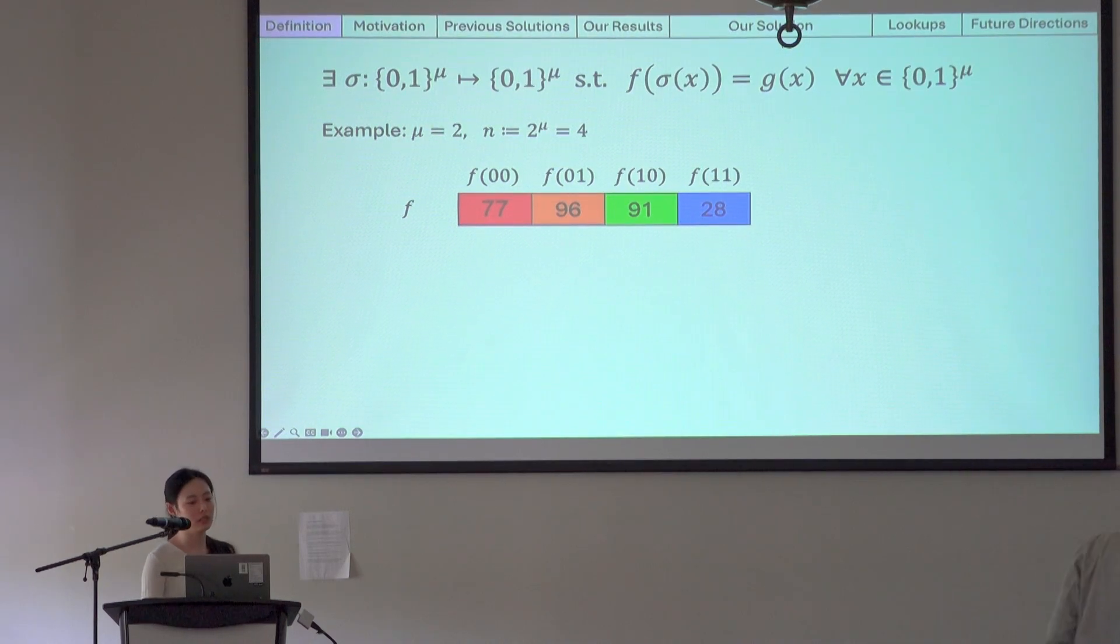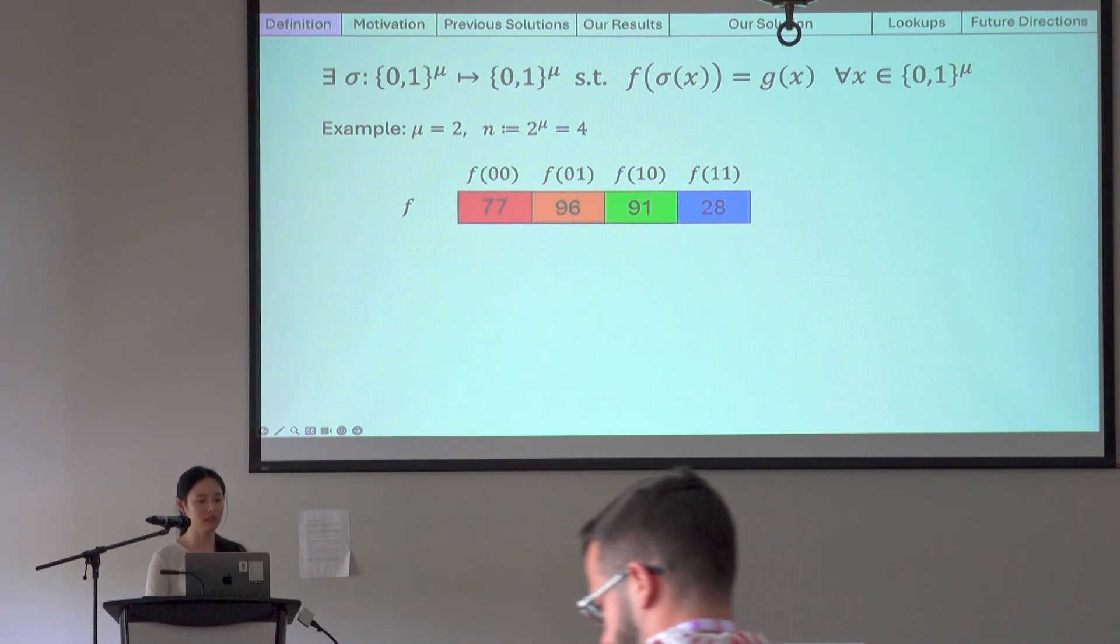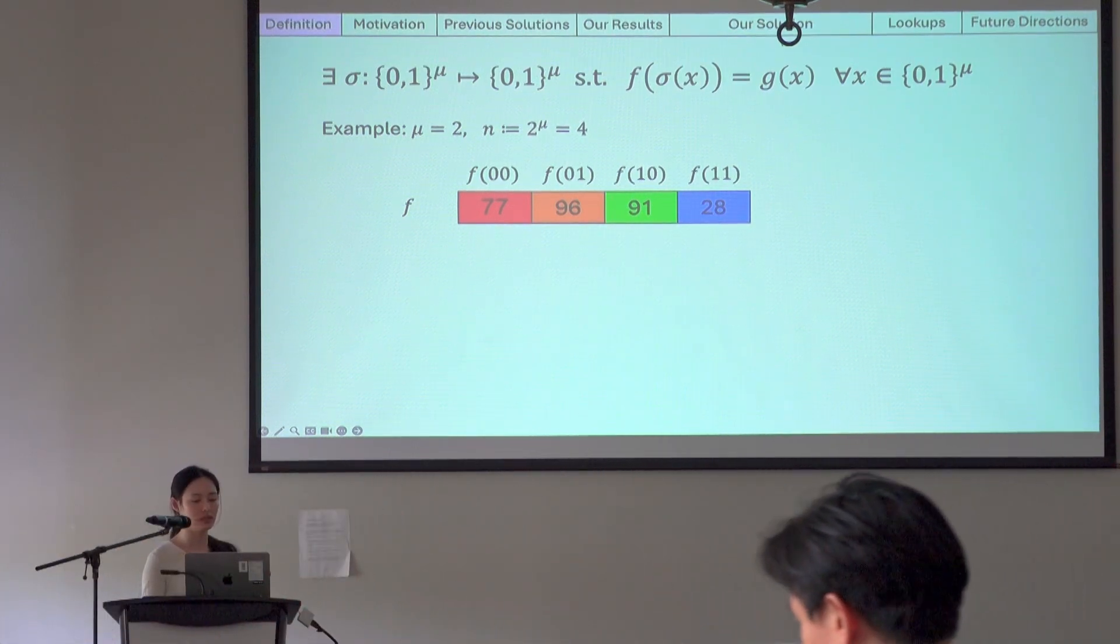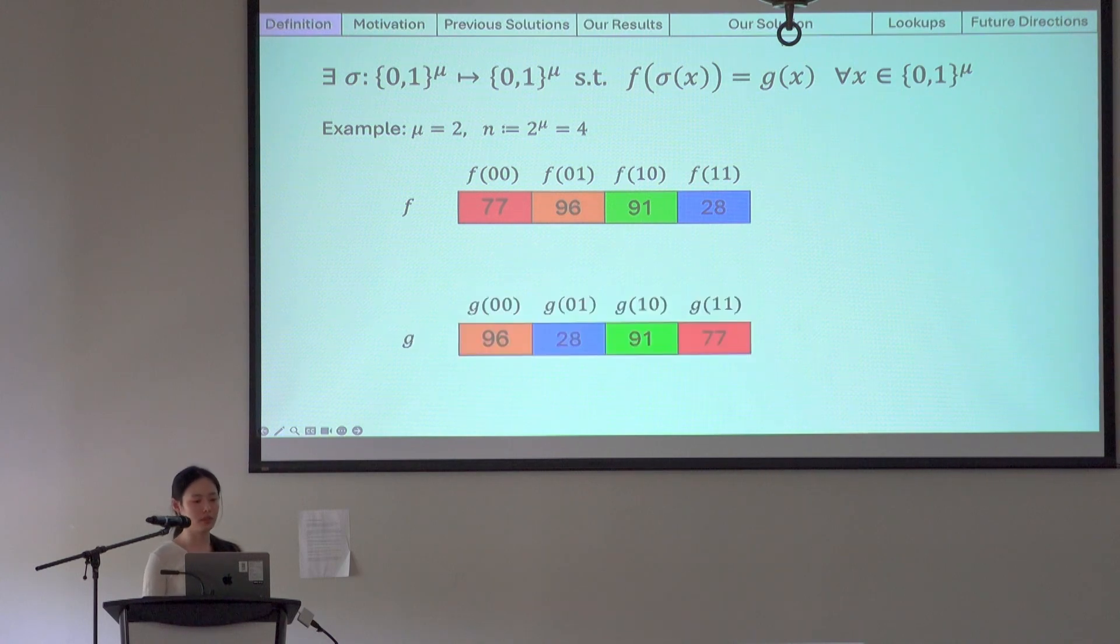Suppose we are given f such that its outputs over the Boolean hypercube are 77, 96, 91, and 28. Now we are also given g with outputs 96, 28, 97, sorry 91, and 77 over the Boolean hypercube.